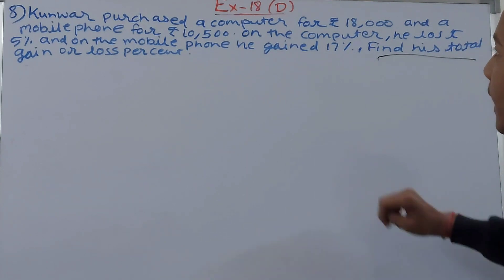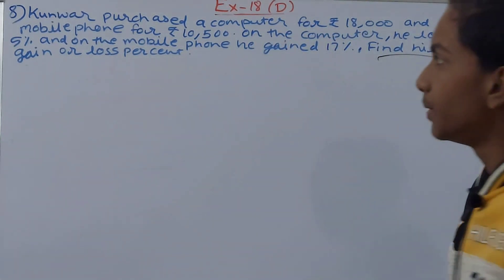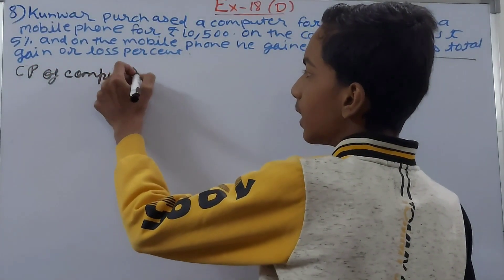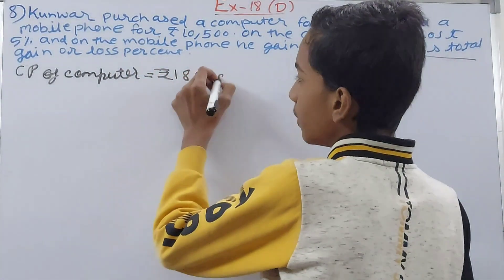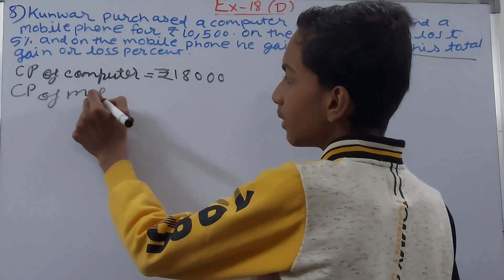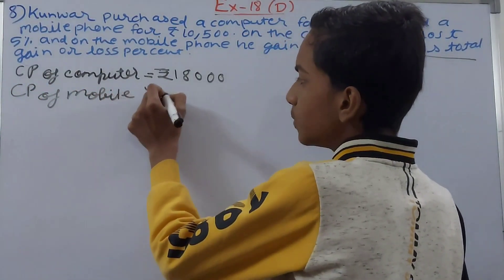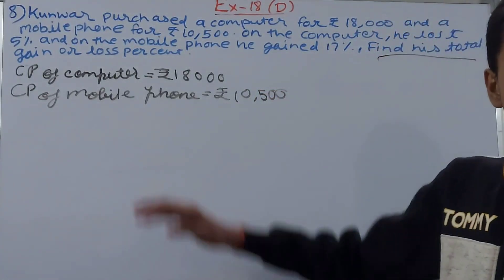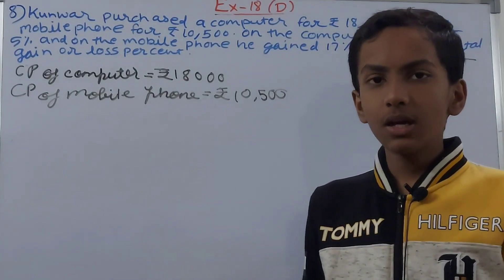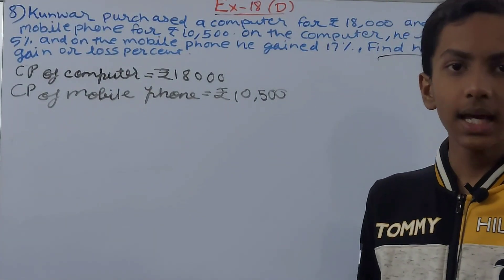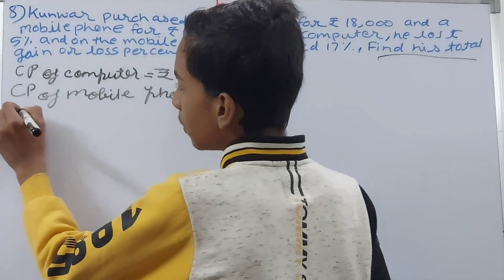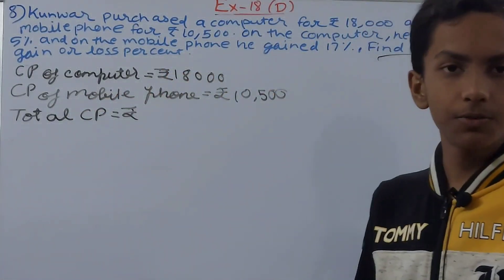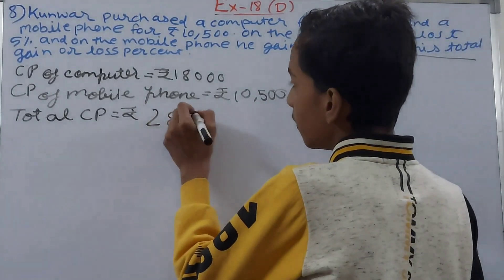So the cost price of the computer is ₹18,000, and the cost price of the mobile phone is ₹10,500. We have two different cost prices, but in order to find the gain or loss we need one combined cost price. So we add both together: Total CP = ₹18,000 + ₹10,500 = ₹28,500.